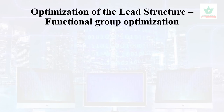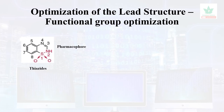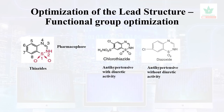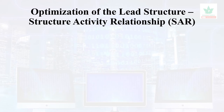Functional group optimization: the pharmacophore of thiazide diuretics contains a sulfonamide group. Lead compound modifications produced chlorothiazide with antihypertensive and diuretic activity. Further modifications led to diazoxide, discovered as an antihypertensive without diuretic activity. Structural activity relationship (SAR) studies of sulfonamide drugs reveal whether a compound is antibacterial, anti-diabetic, or diuretic based on its structural relationships.